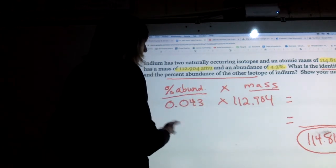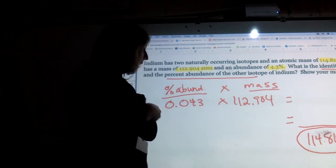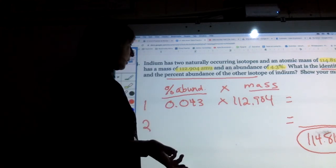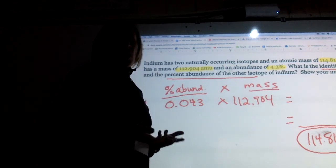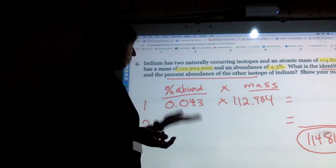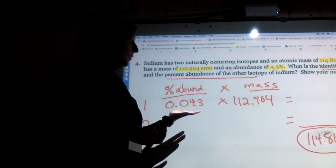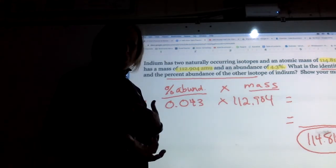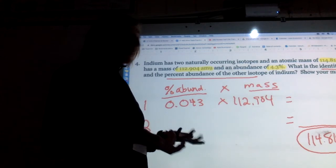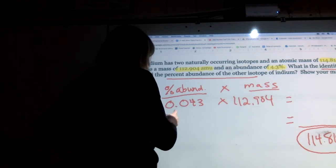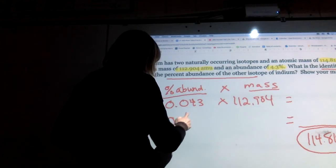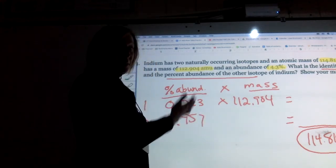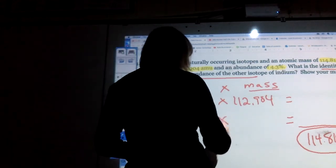So then the other isotope I don't have any information about it except that I do know that it's the only other isotope. So out of the 100% of all indium atoms, if 4.3% is made of this indium-113, then 100 minus 4.3, which would be 95.7%, so 0.957, the other isotope makes up the rest of the percent. And I'm going to multiply that times the mass.